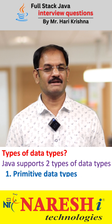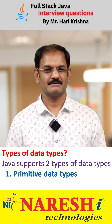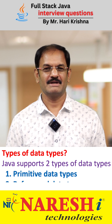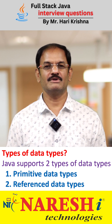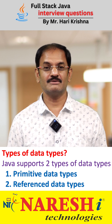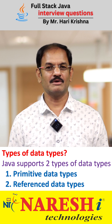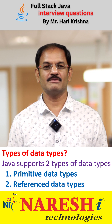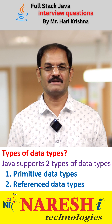Java supports two types of data types. Number one, primitive data type. Number two, non-primitive data types — that is wrong. In Java, we must use the term reference data type. In C++, maybe you use the word non-primitive data type, but in Java we must say reference data type. In an interview, don't say non-primitive data type or you will be considered a non-Java person.